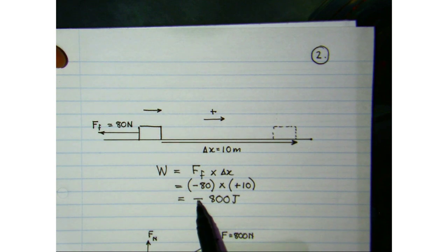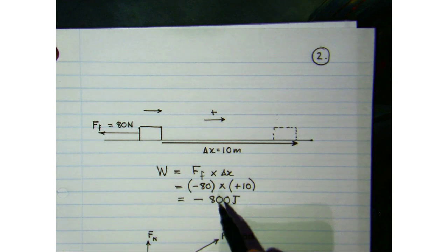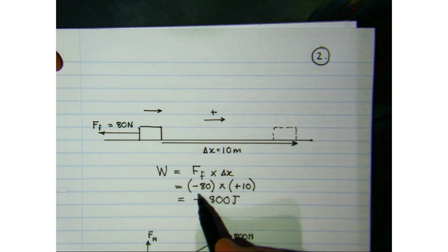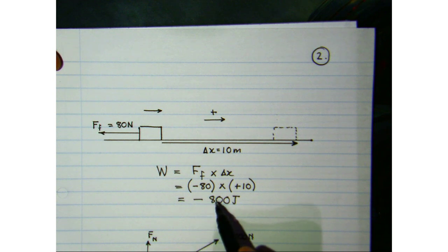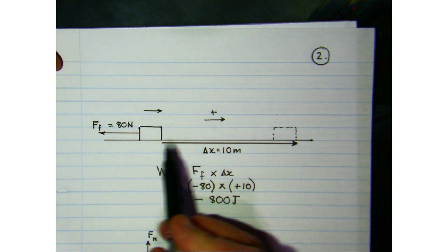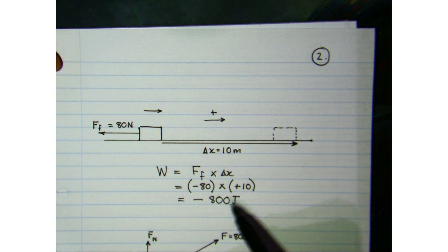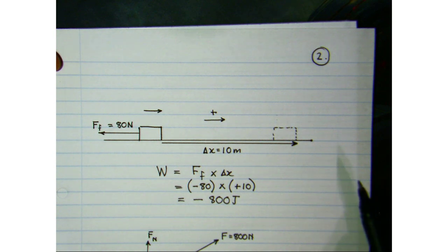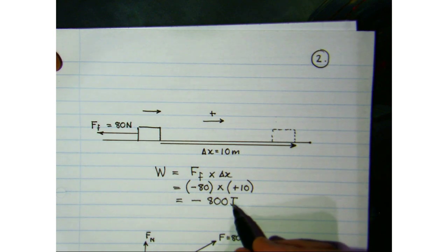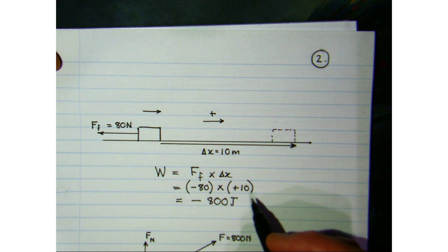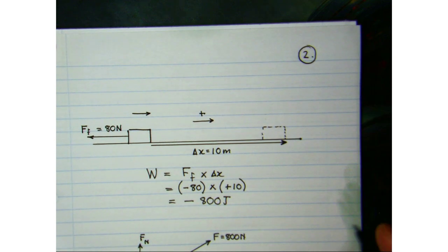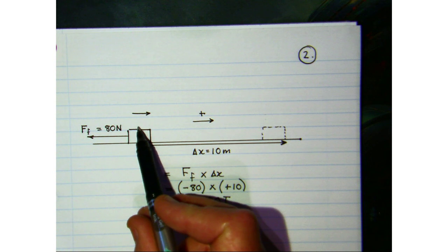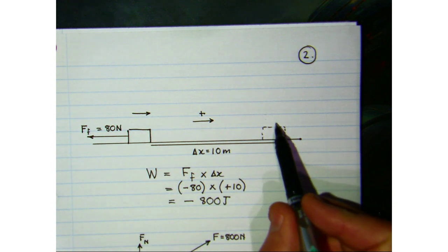The significance of the negative sign is that energy is being removed from the system. Over the 10-meter distance, 800 joules of energy will be lost, going to other forms like heat energy and sound energy. So whatever kinetic energy the box had at the start, it will have 800 joules less when it gets to the end.